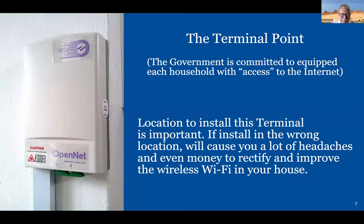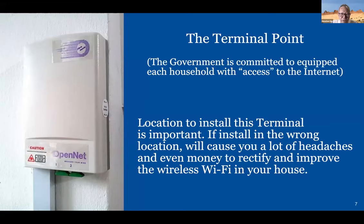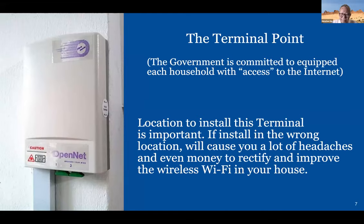Every one of us must have this box somewhere in your house. This is a commitment by the government that each household will have access to the internet. This box, we call it the TP — terminal point. A lot of people don't pay attention to the location of this box, and I think that is a big mistake, as you will understand the reason. It is connected to Singapore's underground network of internet cables, and from there they connect all over the world.